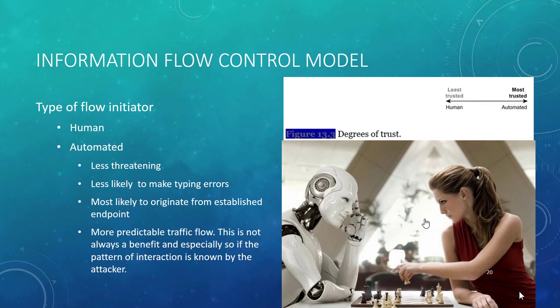As you look at the type of flow initiator, the book differentiates between two: human and automated. In this particular case, you can see in the graphic that the human is least trusted, where an automated flow is actually most trusted. Why? Because you can gather additional information about that automated flow — it's likely to originate from an established endpoint, has more predictable traffic especially in terms of time, doesn't make typing errors, and because we know more about it, it's less threatening. That doesn't mean an attacker won't use an automated flow as a mechanism for launching an attack, but typically automated flows are considered a more trusted flow.